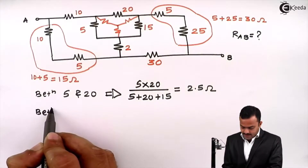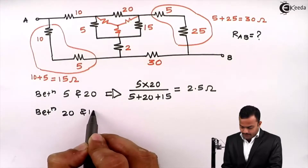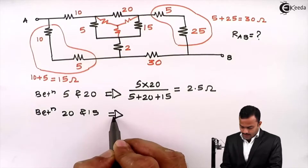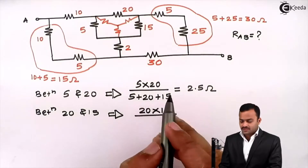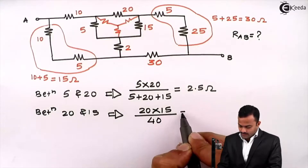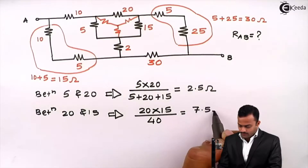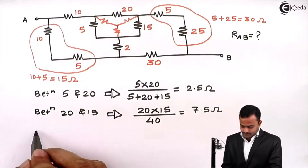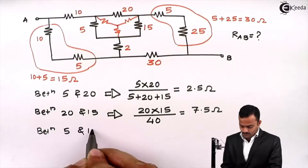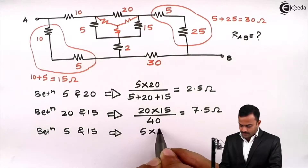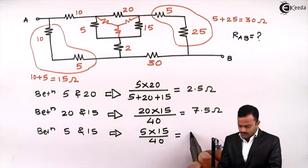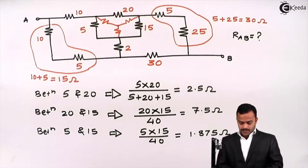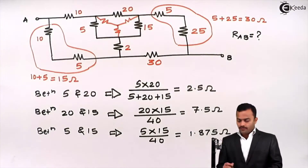Similarly, I can get the resistance between 20 and 15, which is equal to 20 multiplied by 15 upon the addition of the three resistances, giving 7.5 ohm. And finally, between 5 and 15: 5 multiplied by 15 upon 40, which gives us 1.875 ohm. So in one step, we are converting and reducing the number of resistances.